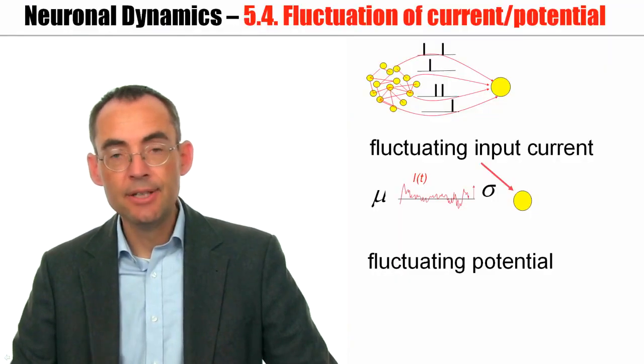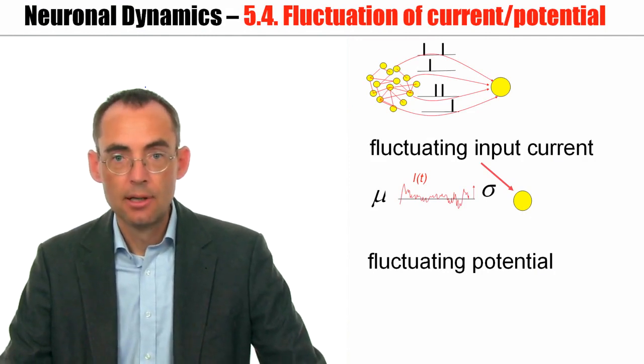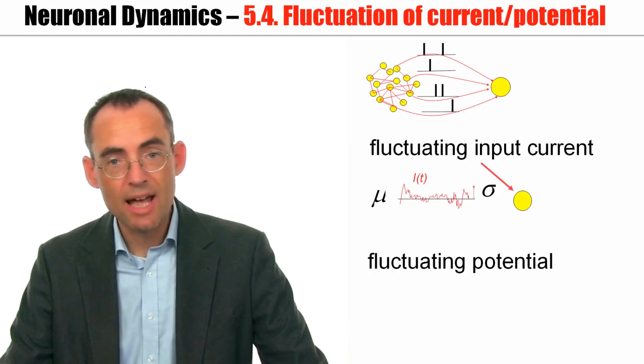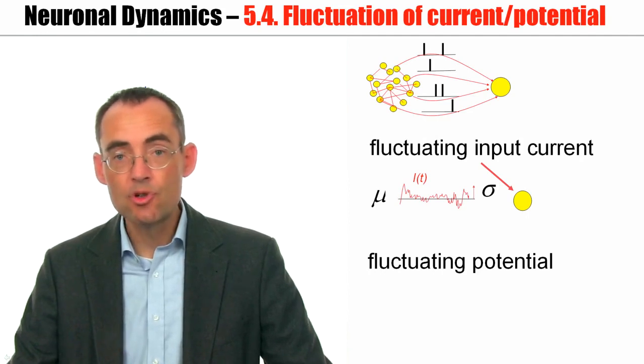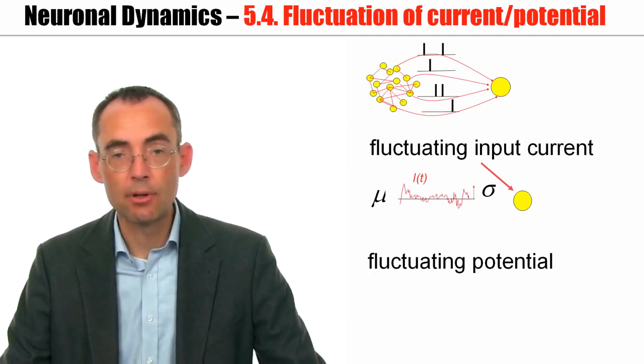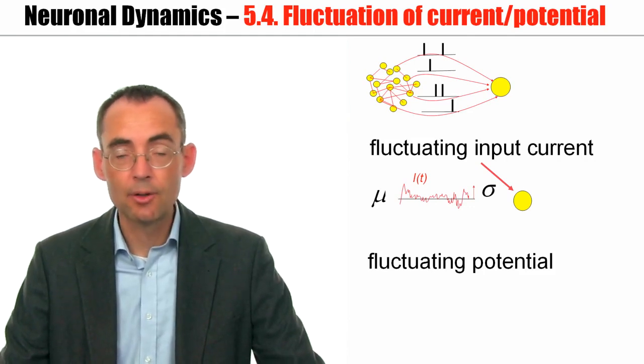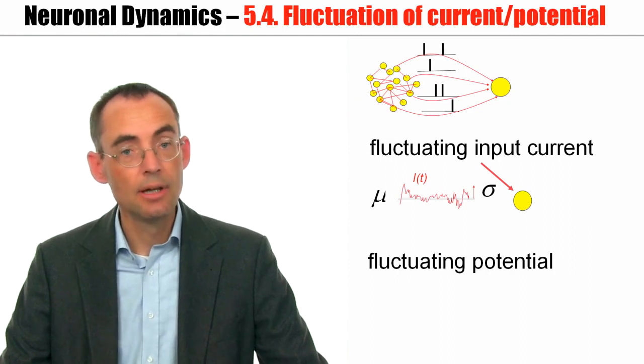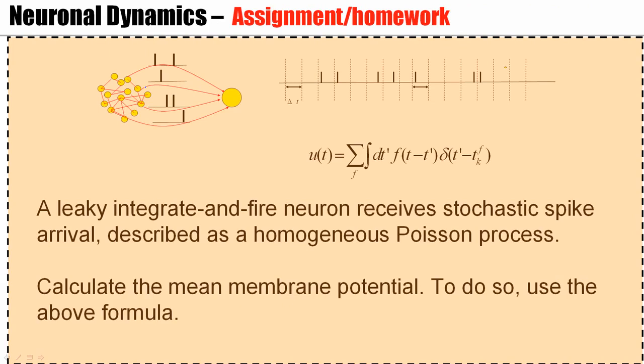Let me summarize. A neuron embedded in a network will see a barrage of spike arrivals, and spike arrivals look stochastic from the point of view of that neuron. Under the assumption of Poisson-like stochastic spike arrivals, we can calculate the mean input current, the fluctuating part of the input current, and also the mean potential and the fluctuations of the potential. A first step of this calculation for the potential is part of the homework assignment. So I will see you in a moment. Thank you.